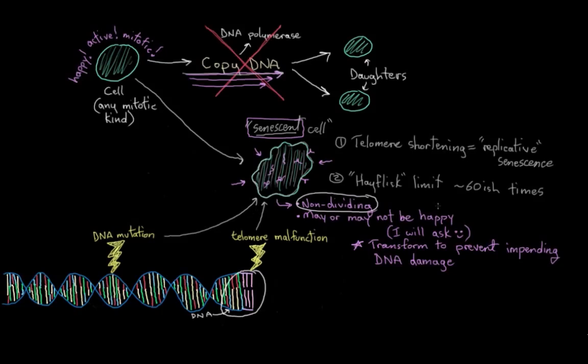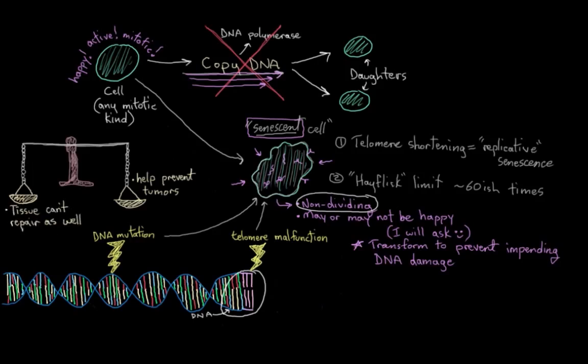So is there actually a problem with senescent cells? We're not really sure yet, but conceptually on one hand, they help prevent tumors or cancers from happening because they're not allowed to divide anymore. But on the other hand, as we get older and our tissues have more and more senescent cells in them, the tissue can't really repair itself as well as it used to because there's fewer actively mitosing cells around. And there's actually also some evidence linking senescent cells to age-related diseases like cataracts. But this is a pretty active area of research.